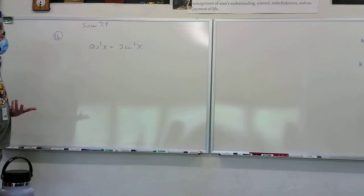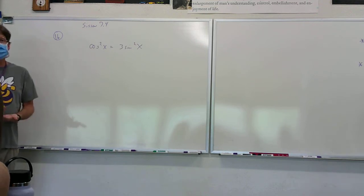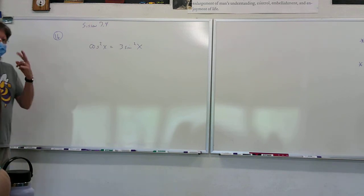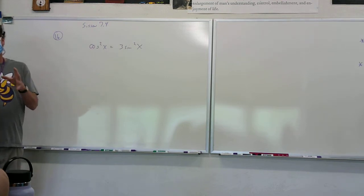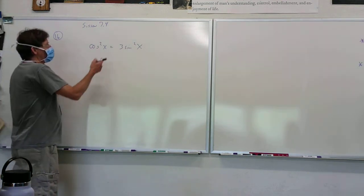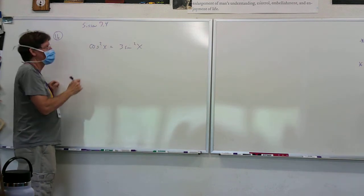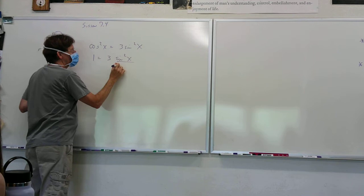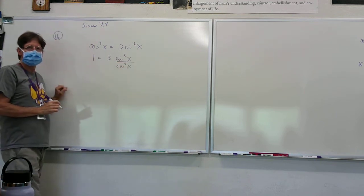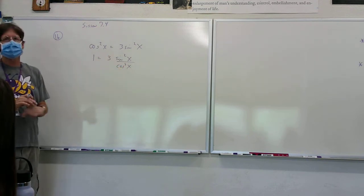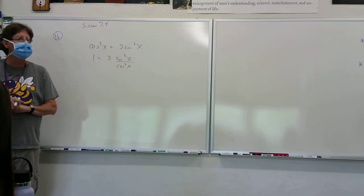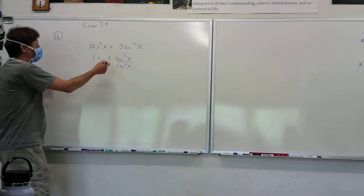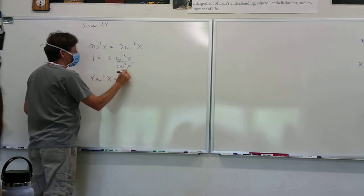Someone asks: could you take the square root of it right now? Actually you could, as long as you remember to use plus and minus. I'm going to show you two different ways to work it, because I think I would factor it. But what would happen if I divided both sides by cosine squared? I would get 1 equals 3 sine squared x over cosine squared x. What does sine squared x over cosine squared x equal? Tangent. So I get tangent squared x equals 1/3.